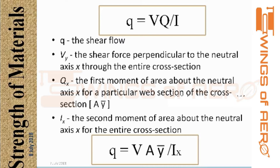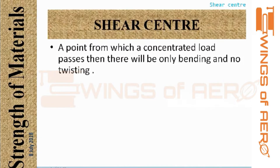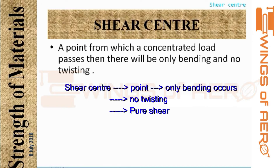So we can write Q equals V·A·y-bar divided by I_x. Now comes the shear center. A shear center is a point through which a concentrated load passes such that there will be only bending and no twisting. At the shear center, the stress is pure shear and there is no torsion at that point.